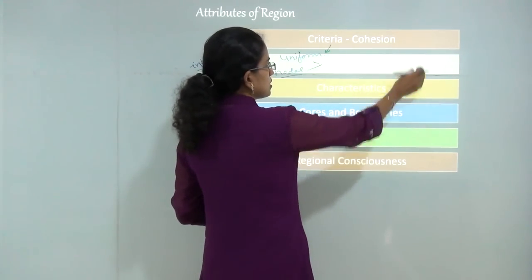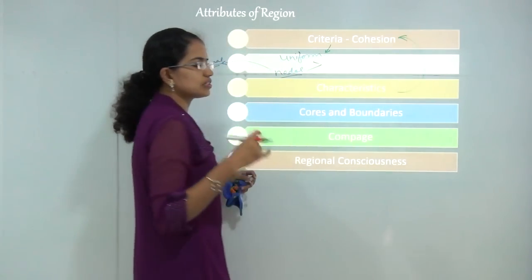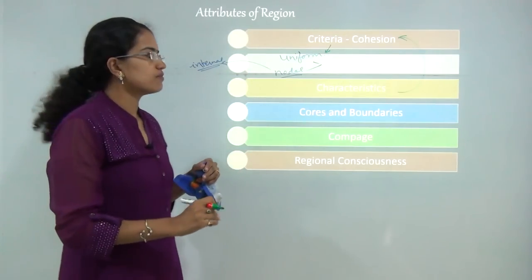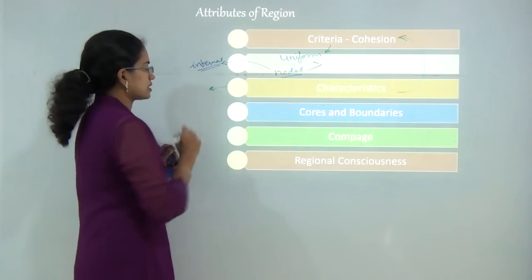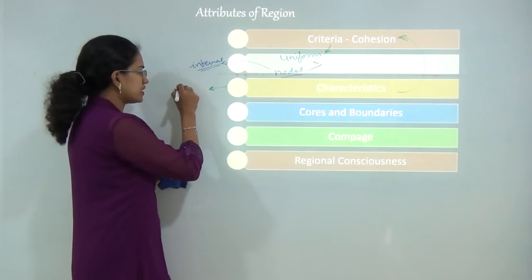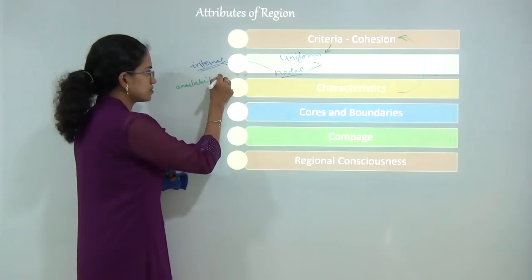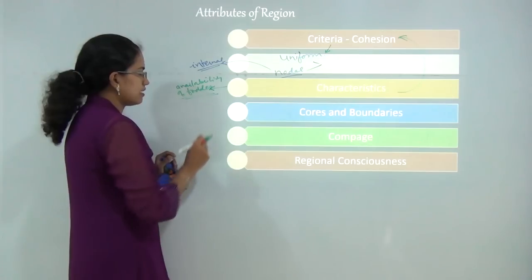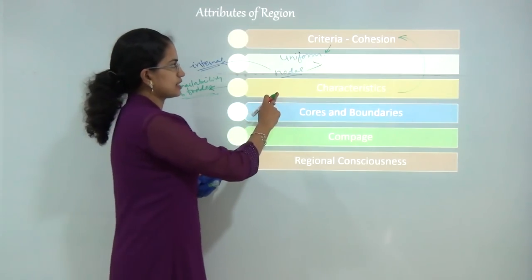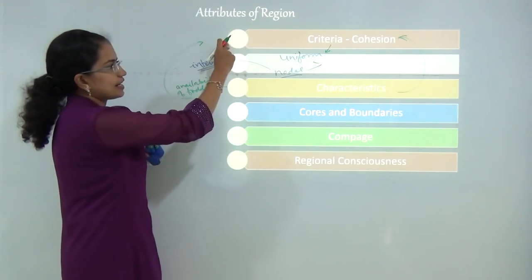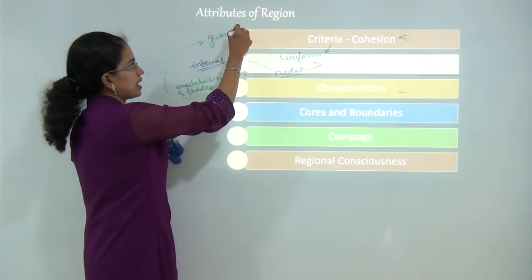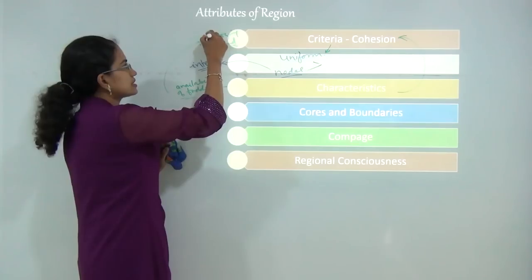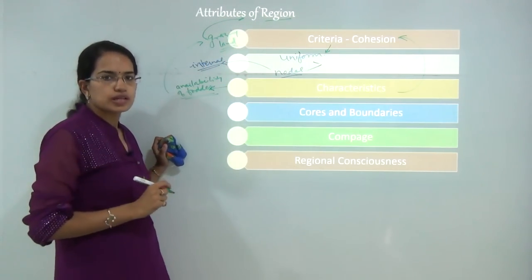Characteristic deals with the criteria. Based on certain characteristics, I can provide criteria based on which I would define a region. For example, I am trying to provide characteristics of availability of fodder for the grassland or pastures. When I say availability of fodder, that is one of the characteristics. Based on this, the criteria I can define is whether this land is a grazing land, whether it is optimum as a grazing land or not. This criteria can then be used as one of the attributes to classify the region.